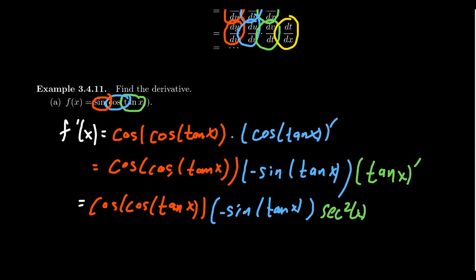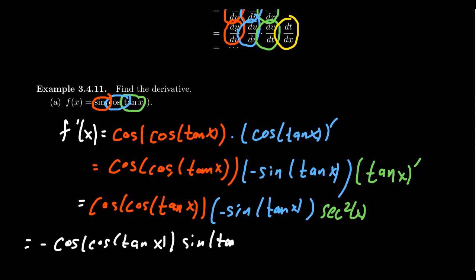I'll put the negative sign out in front so it doesn't look like subtraction. So you get: negative cosine of cosine of tangent of x, times sine of tangent of x, times secant squared. That is the derivative of the function. We can take the derivative of these nested functions just by taking the derivative of one link of the chain at a time. Let's look at another example.